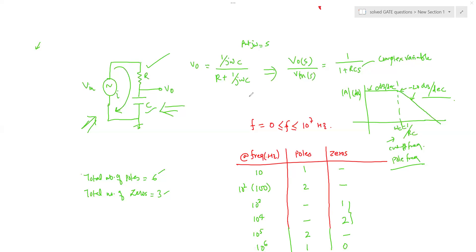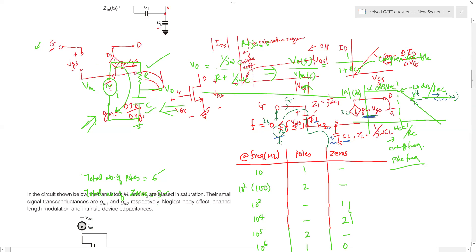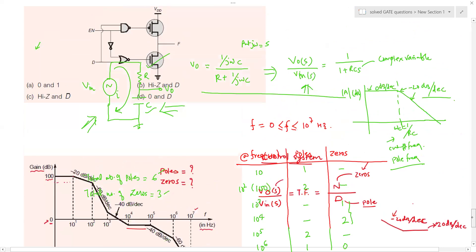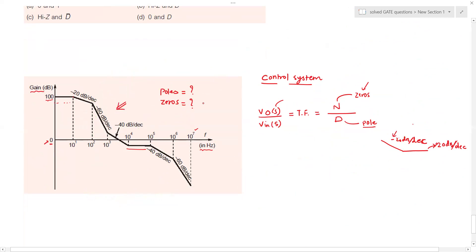I hope you found this brief video useful. We are not going to derive the transfer function here as that has been done in earlier modules, which you are encouraged to refer to. The objective of this module was to give you an understanding of the Bode plot — what poles are, what zeros are, and how the plot behaves when they occur in the system. If you found this video useful, click the like button, hit subscribe, share it with others for wider reach, and stay tuned for more engaging content. Happy learning!